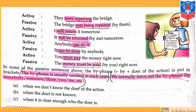The first sentence on page number 74 in active voice is: 'They were repairing the bridge.' The bridge, which was at the place of object in active voice, will become the subject in passive voice. We will write: 'The bridge was being repaired by them.'